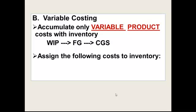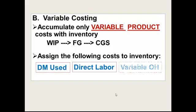Under variable costing, on the other hand, you accumulate only variable product costs with inventory. Costs still flow through the same accounts — work in process, finished goods, and ultimately cost of goods sold when inventory is sold. The costs assigned to inventory include direct material used, direct labor, and variable overhead applied. Fixed overhead is not assigned to the product even though it's a product cost under this method, because direct materials, direct labor, and variable overhead tend to be variable costs.